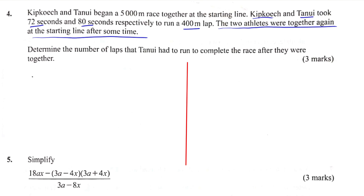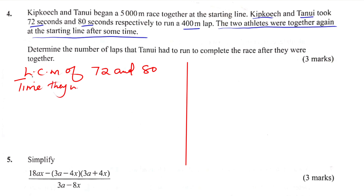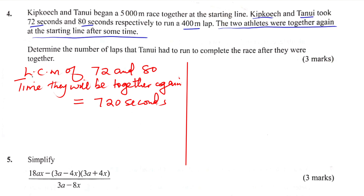we shall find the LCM of the respective times taken, that is 72 and 80. This LCM will give us after how long they will be together at the starting line again. The LCM of 72 and 80 gives 720 seconds. So they are together again after 720 seconds.